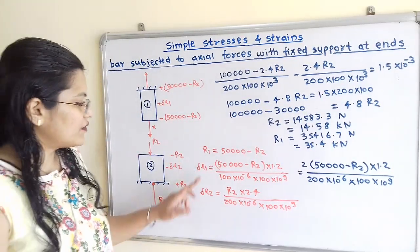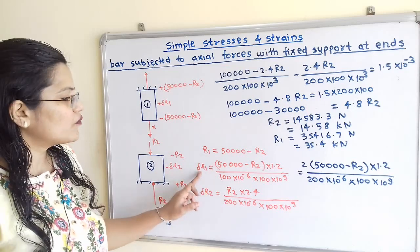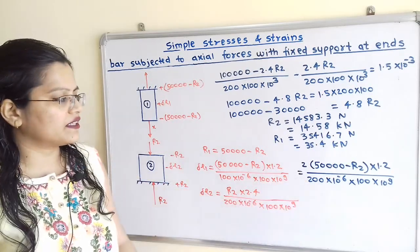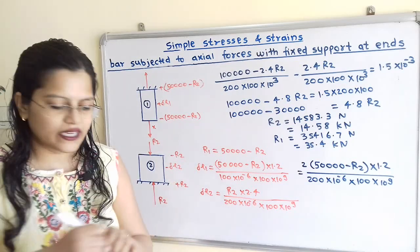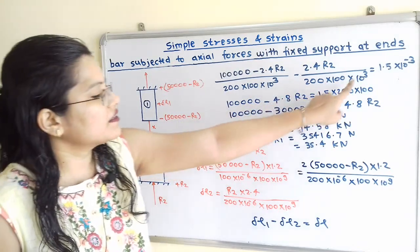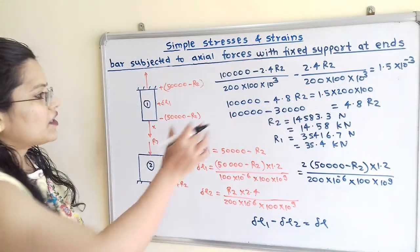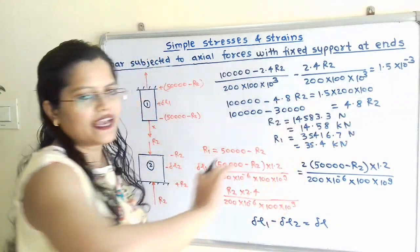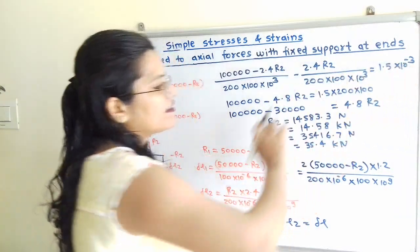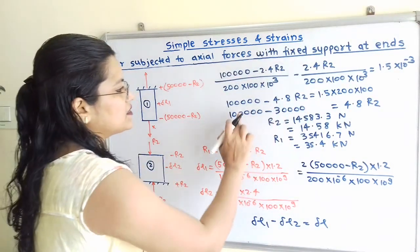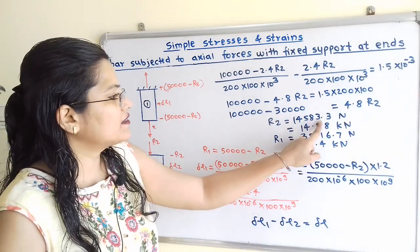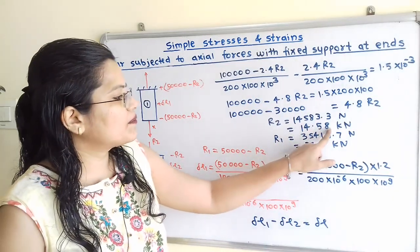Observing the denominators of delta L1 and delta L2, we multiply the denominator of delta L1 by 2 over 2 so that both denominators become the same. Now we simplify by substituting delta L1 minus delta L2 equals delta L, where delta L is 1.5 × 10⁻³ m. The 10³ and 10⁻³ cancel. After simplifying all terms, we get R2 equal to 14,583.3 Newton, which we write as 14.58 kilonewton.